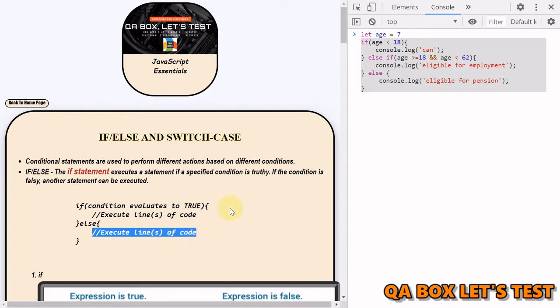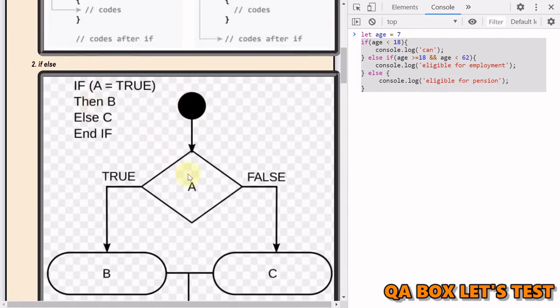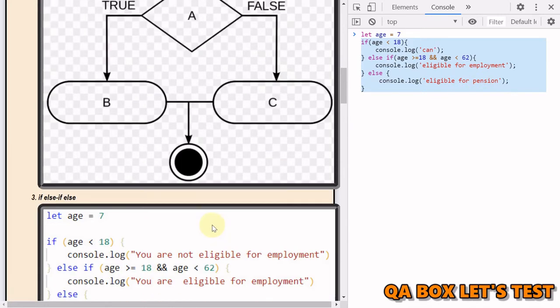Something like this. So this is your decision point. If A evaluates to true, it goes to true. It goes to B, means A's block of code would be executed. So if block of code would be executed. If it evaluates to false, else block of code would be executed.